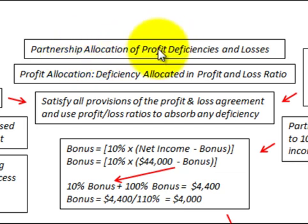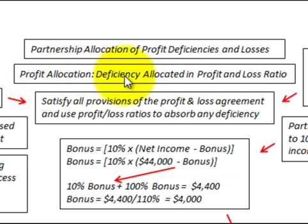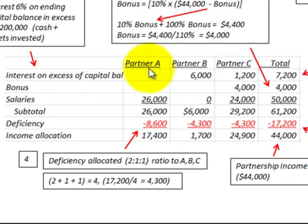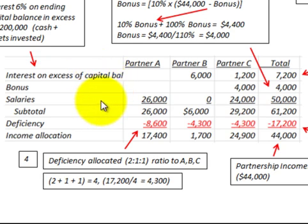Here we're going to be looking at a partnership allocation of profit deficiencies and losses. The partnership is going to have a loss for the period and it has to be allocated amongst the partners. The method we're looking at is a profit allocation method, where the deficiency is allocated in the profit and loss ratio. We'll have partners A, B, and C, with allocations for interest in excess of capital, bonuses, salaries, and then a deficiency to allocate.